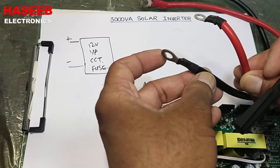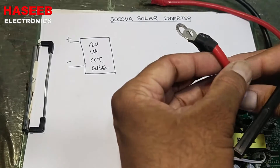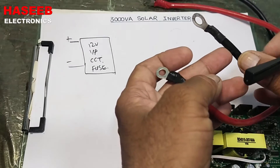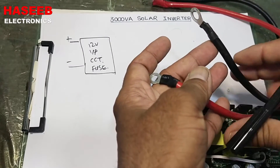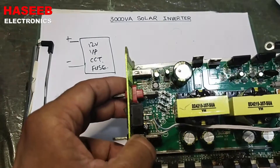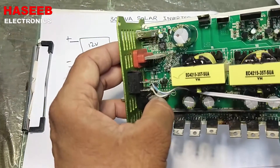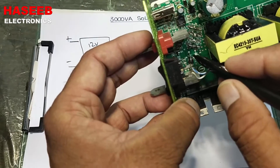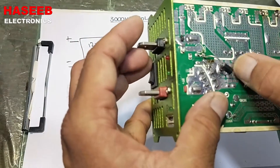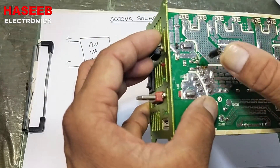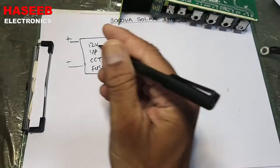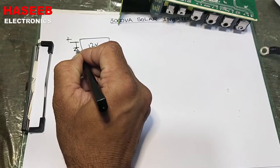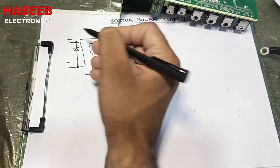The positive cable should be connected to positive and the black cable to negative. If these cables are reversed in polarity, it may damage the circuit. To protect against this, there is a protection diode — two diodes in parallel at the input terminal. One diode was removed for testing purposes since this inverter was damaged.